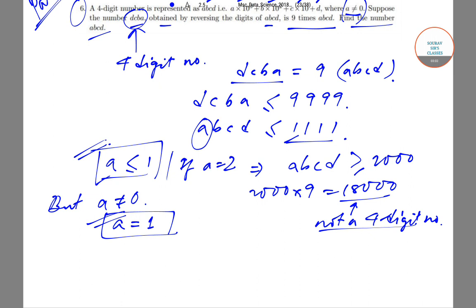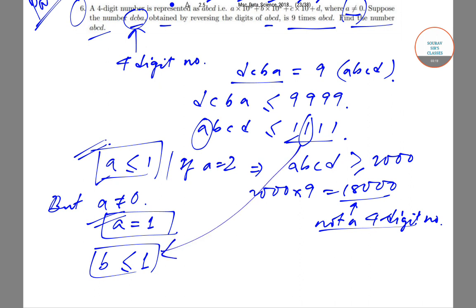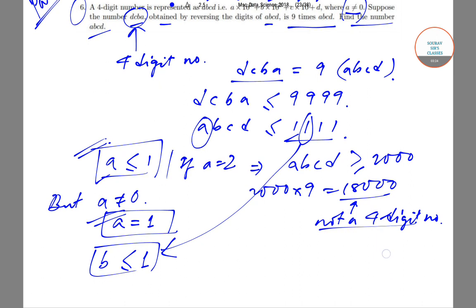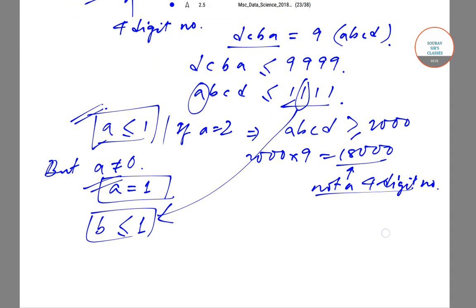Moving to the second condition: we have already found that B must also be at most 1, so B ≤ 1. We do not know whether B is equal to 0 or B is equal to 1, so we have to check both cases.